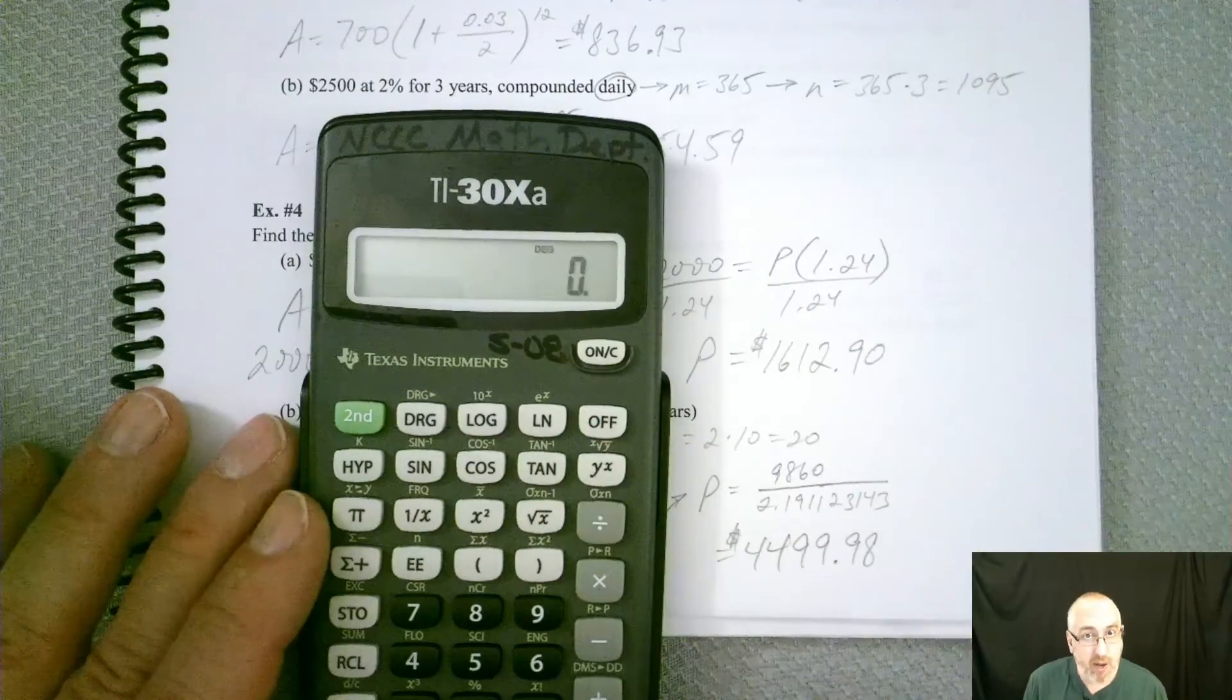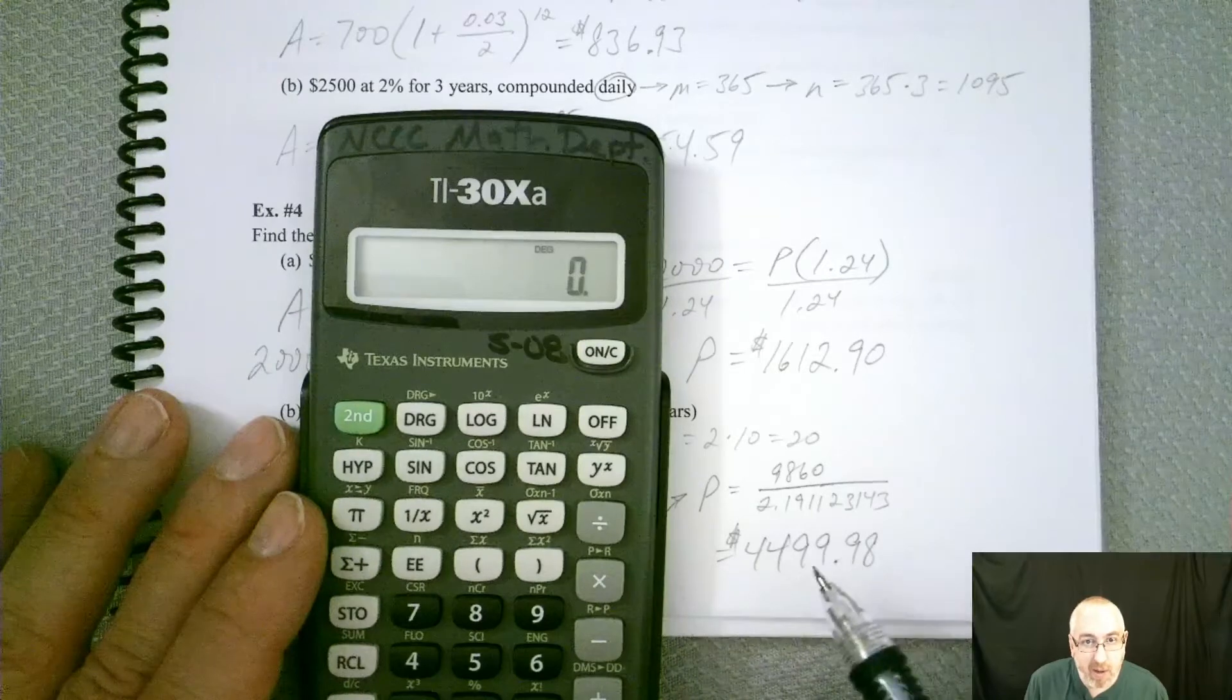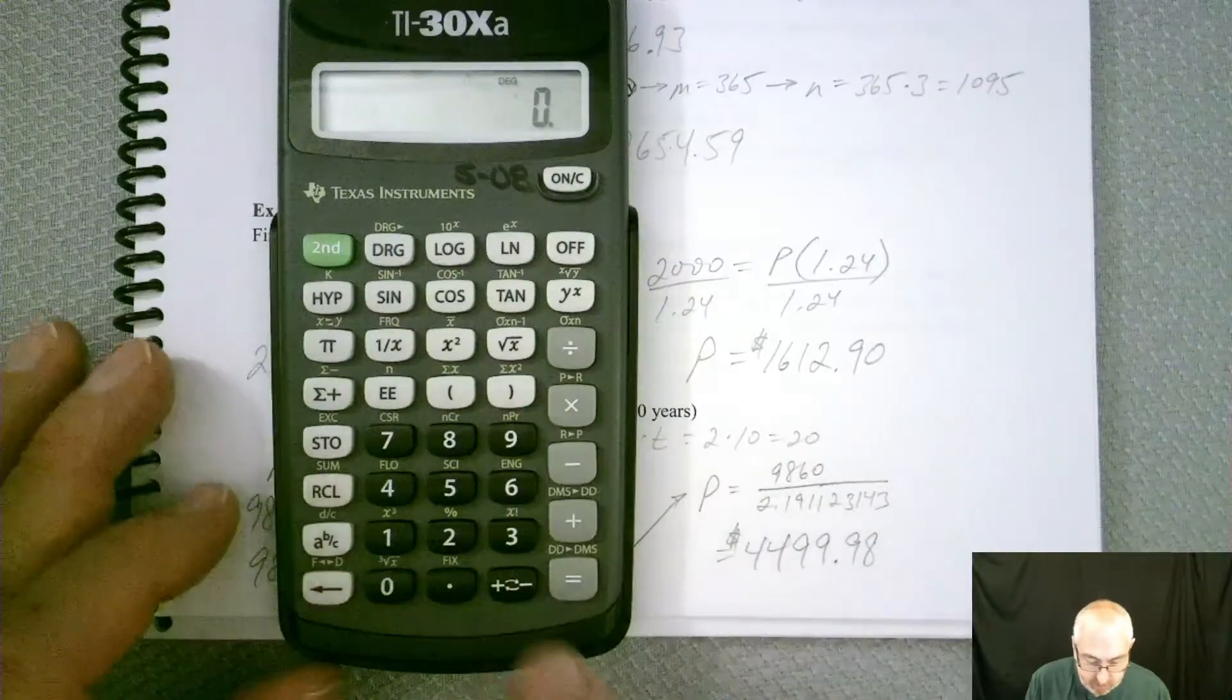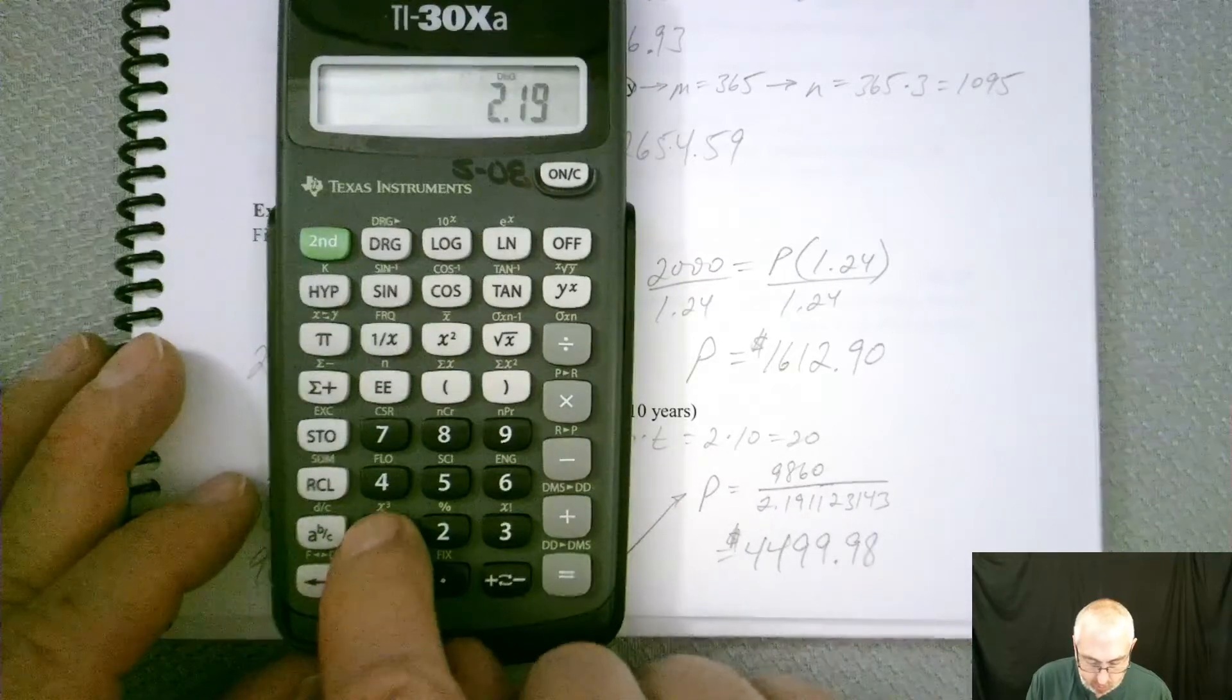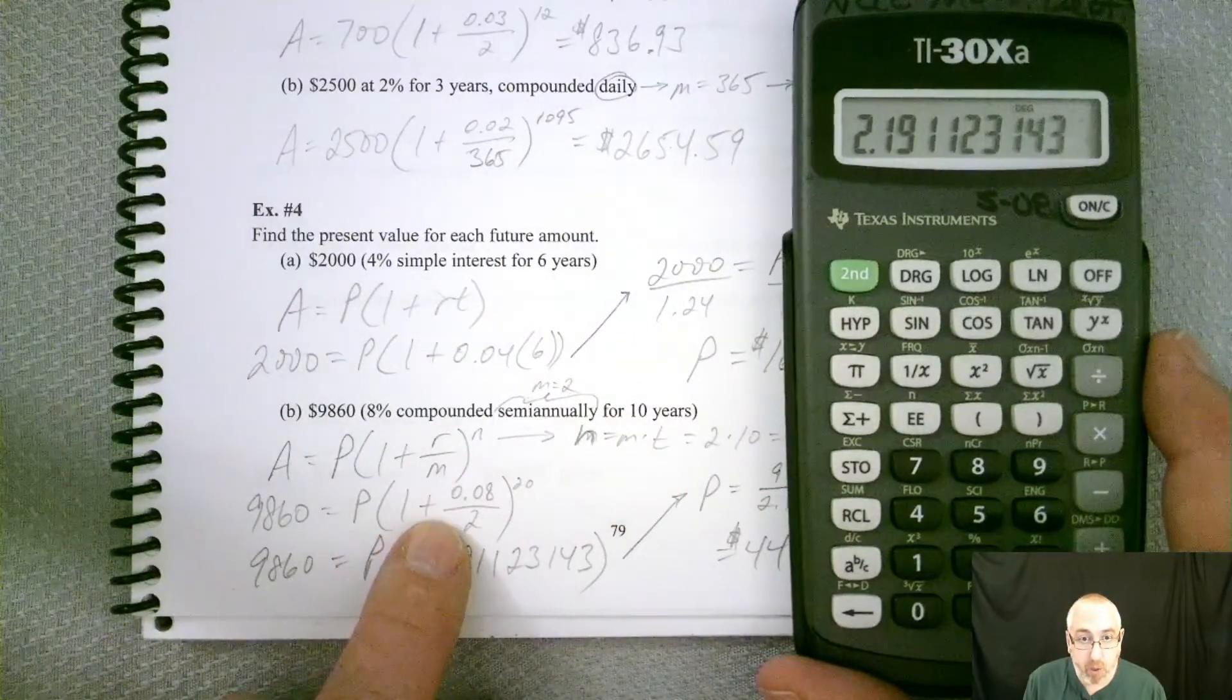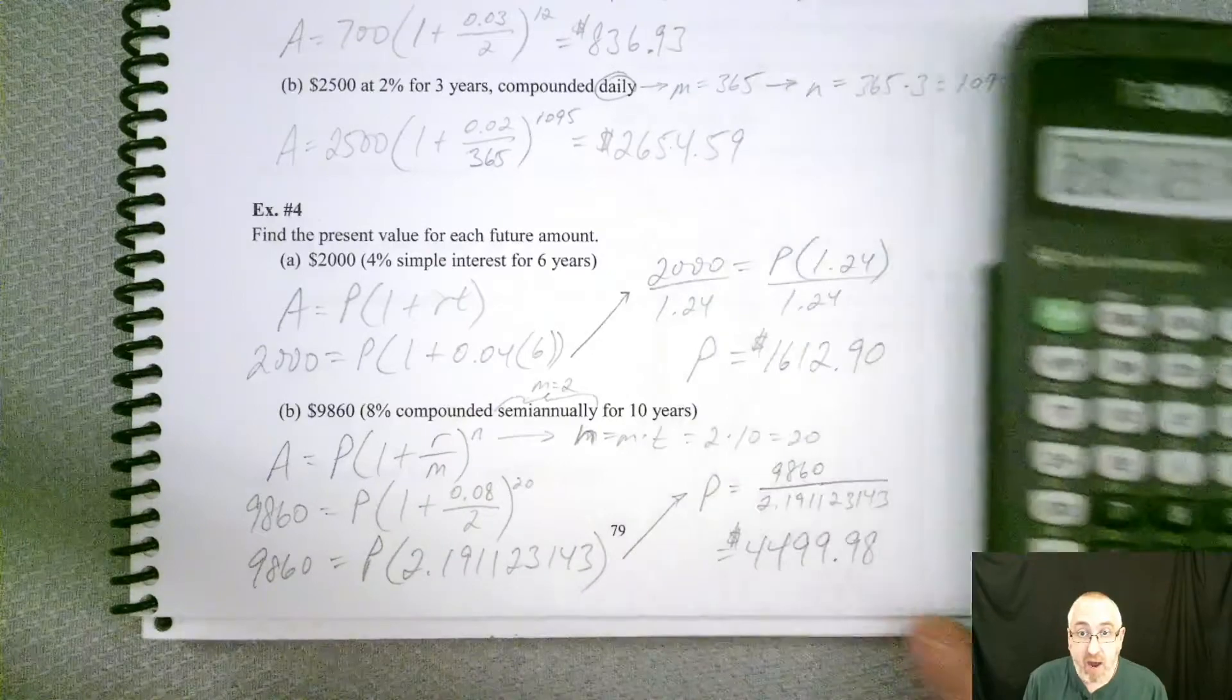Now a trick, if you don't want to have to write all that and type it all out into your calculator again and again, here's a trick. Now let's say we did all those calculations and we said, okay, we got 2.191123143. So we did those calculations like we did over here and we raised 1.04 to the 20th power and that's what we got.